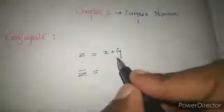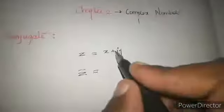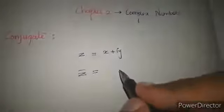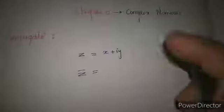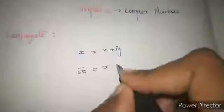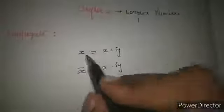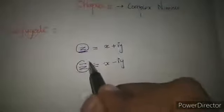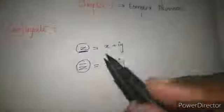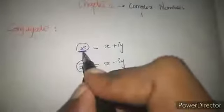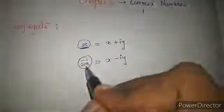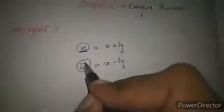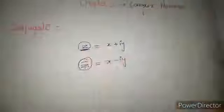The notation for conjugate is z bar. The central idea is, in the place of plus, putting a minus. So it's the same concept: x in the place of plus becomes minus iy. So this is complex number, this is conjugate complex number. The notation for conjugate complex number is z bar. Understand?